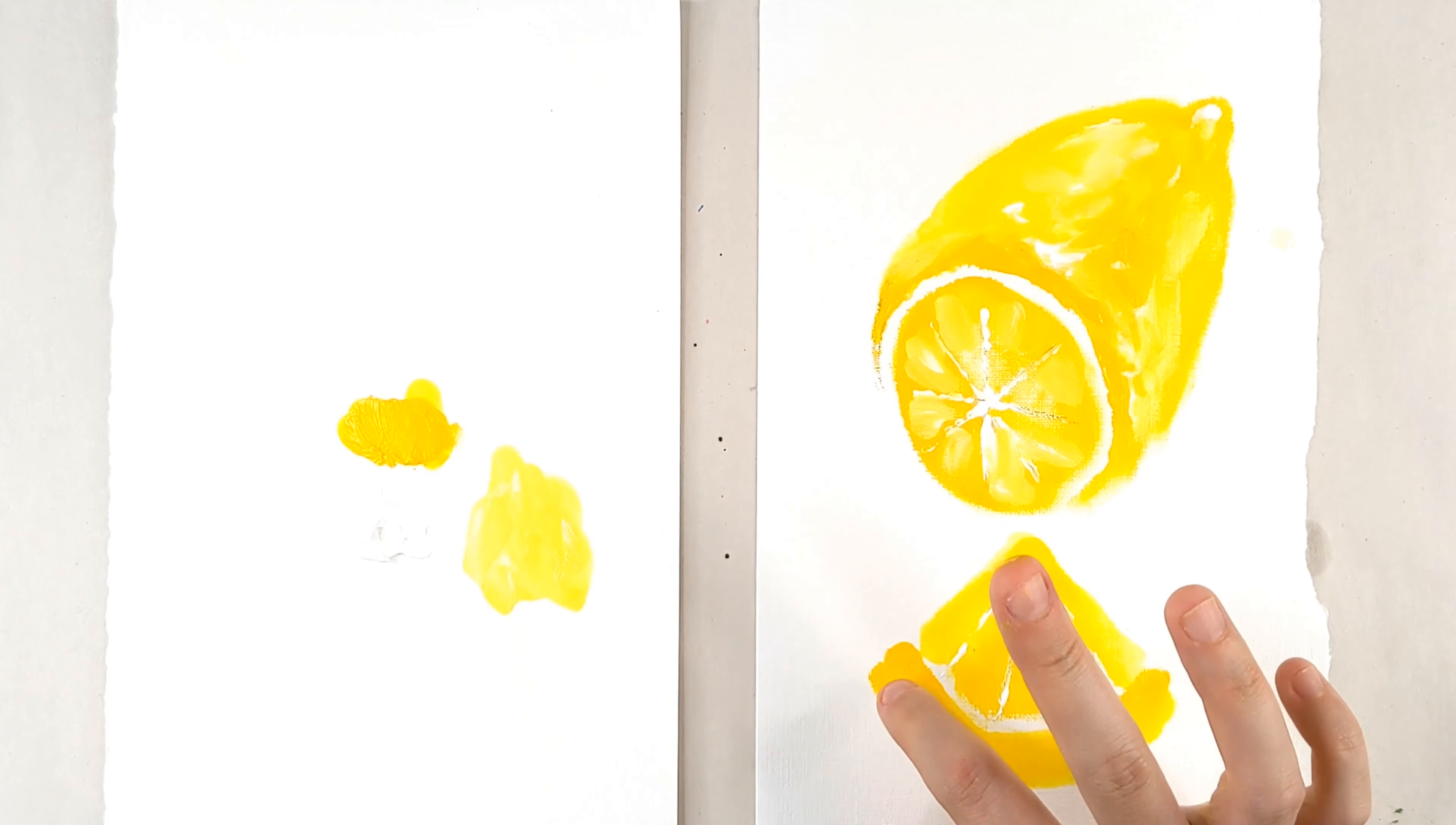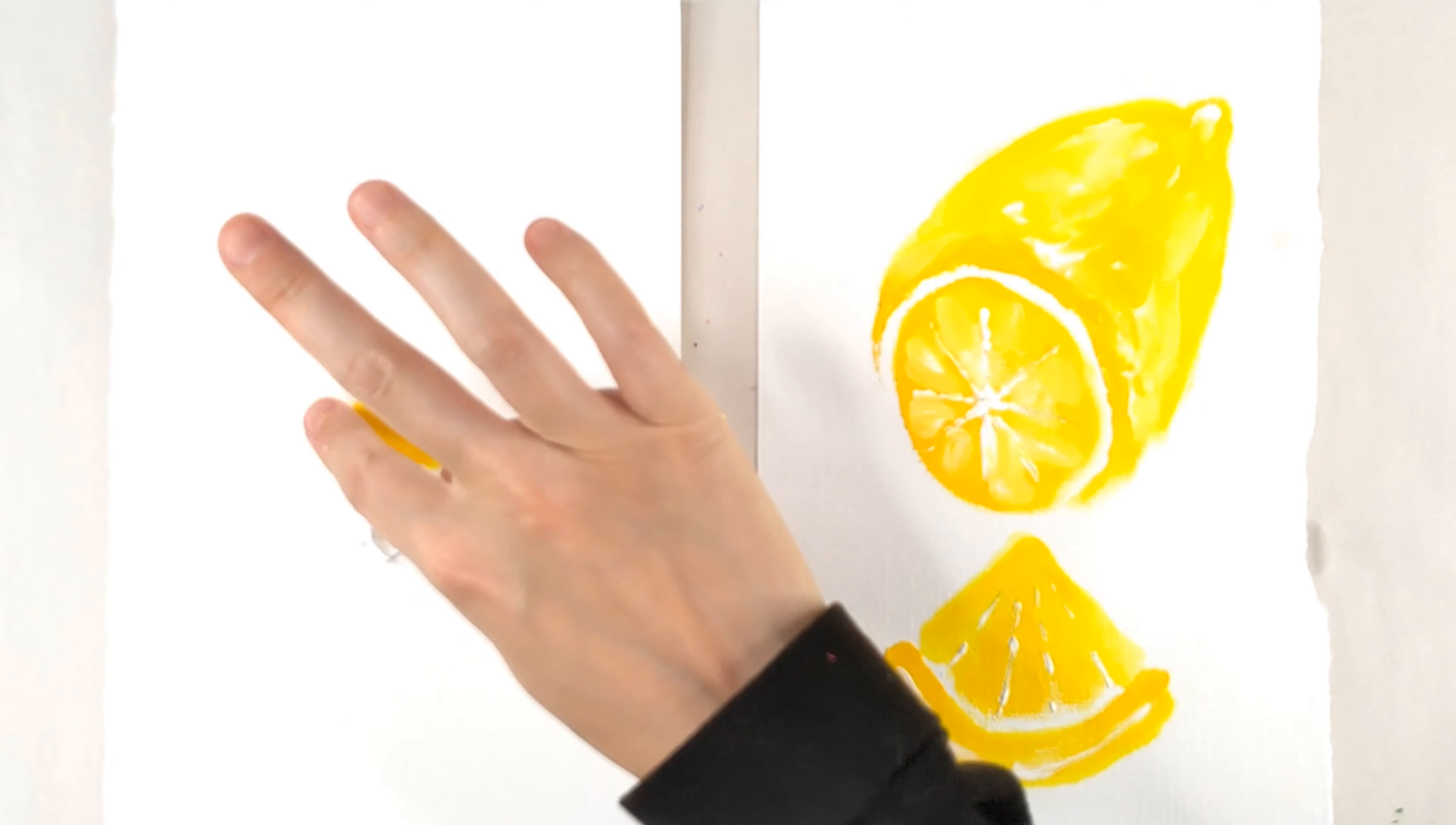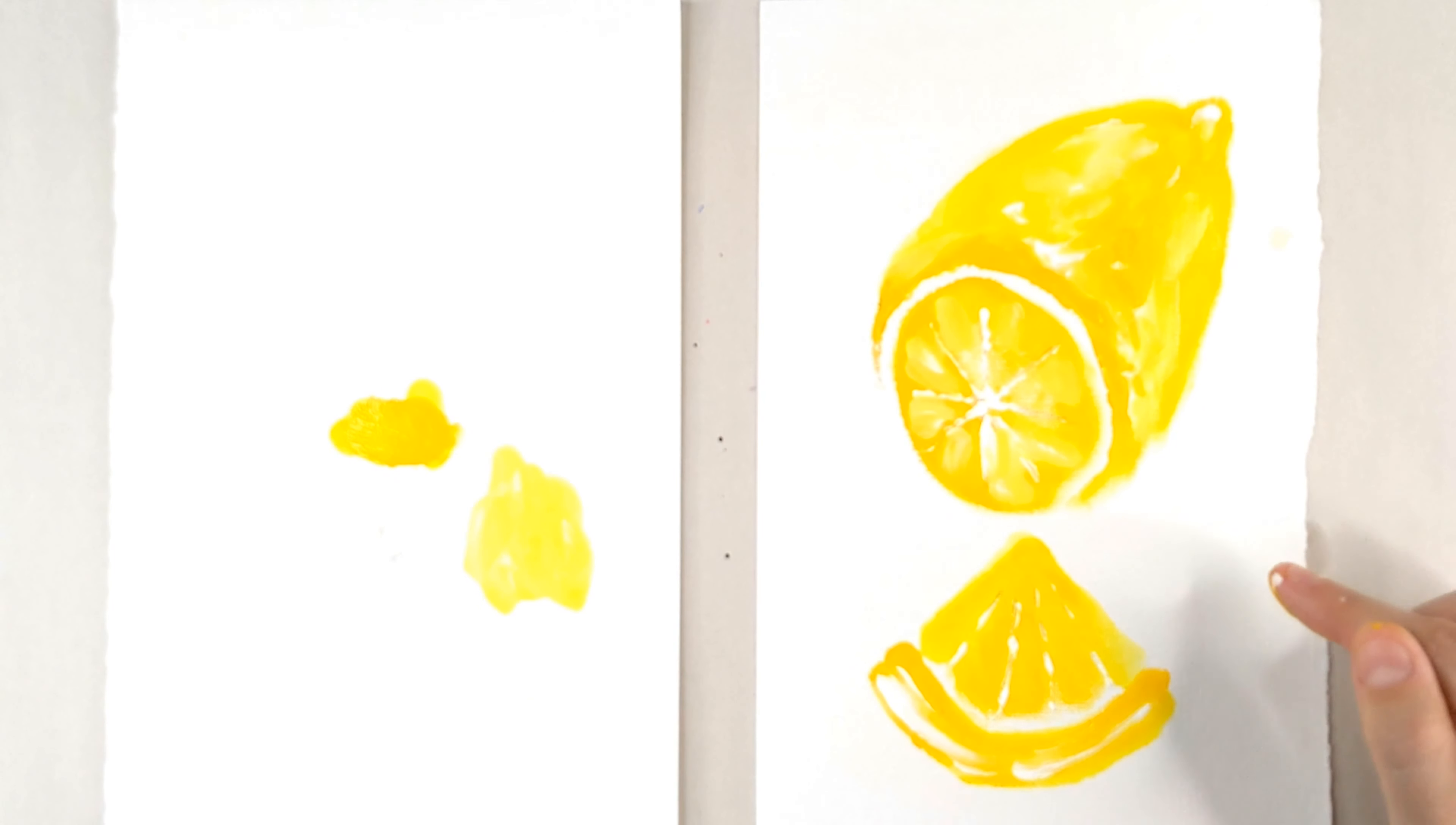So easy. So so easy. Throw a little highlight on there too. I had a lot of fun with this painting. I think it's super bright and colorful and it's perfect for a kitchen or another area if you like the color yellow. It's just so sunny and happy.